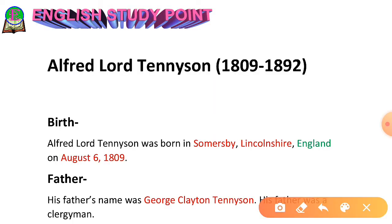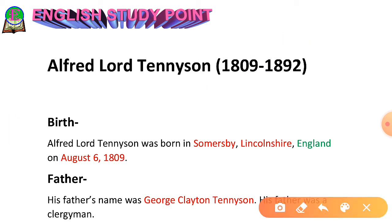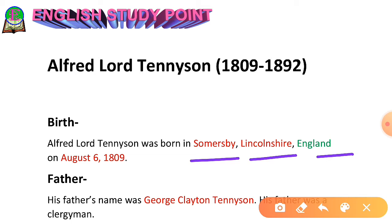Alfred Lord Tennyson was born in 1809 and died in 1892. The date of his birth was August 6, 1809, and the place of his birth was Somersby, Lincolnshire, England. Note these points — if you want to take notes, pause the video and write them down.